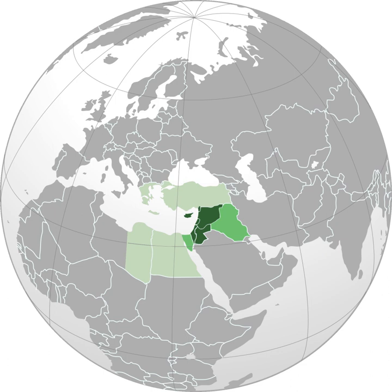Most populations in the Levant speak Levantine Arabic, usually classified as the varieties North Levantine Arabic in Lebanon, Syria, and parts of Turkey, and South Levantine Arabic in Palestine and Jordan. Each of these encompasses a spectrum of regional or urban and rural variations. In addition to the varieties normally grouped together as Levantine, a number of other varieties and dialects of Arabic are spoken in the Levant area.